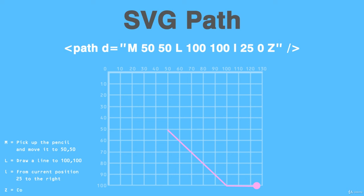The last command is 'Z', which says we're done — complete the loop and go back to where we started, closing the path. Now let's put all of these into code so it makes more sense.